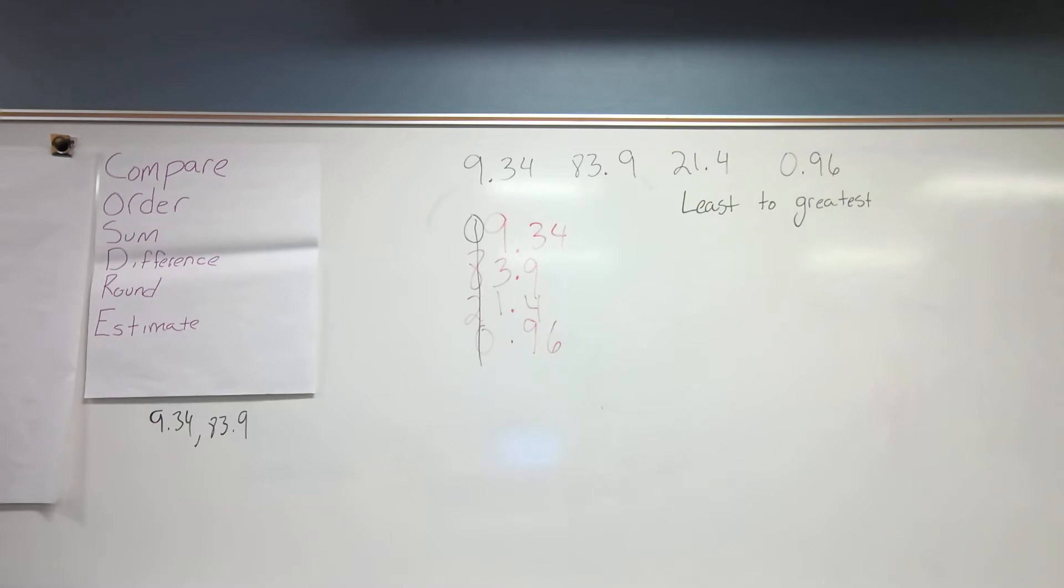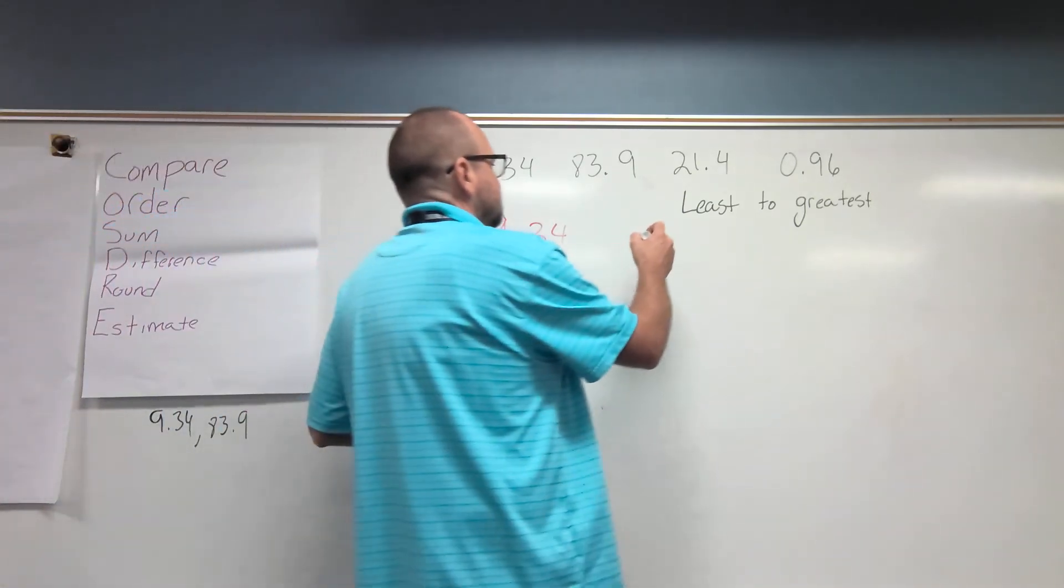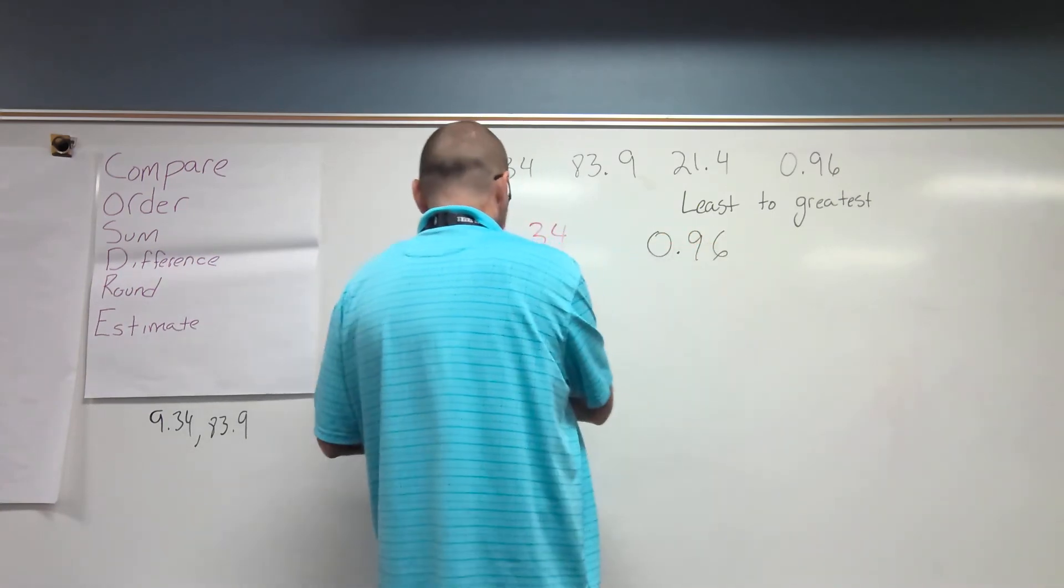No, it's not true. I'm sorry, I forgot it already. Carter? Least to greatest. Wait, you want me to say the biggest one? No, I want to know the smallest one, since we're going least to greatest. The smallest one would be 0.96 or zero and 96 hundredths. Now I'm done with that.